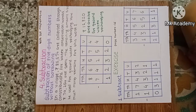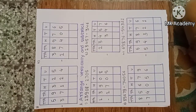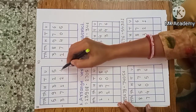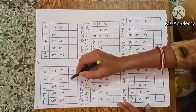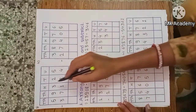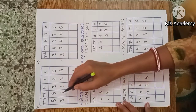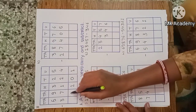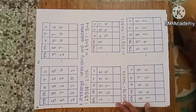This is subtraction without borrowing. Third example: 59,325 minus 37,124. Start from the unit place: 5 minus 4, one remaining. Tens: 2 minus 2, zero remaining. Hundreds: 3 minus 1, two remaining. Thousands: 9 minus 7, two thousands remaining. Ten thousands: 5 minus 3, two remaining. The answer is twenty-two thousand two hundred and one.